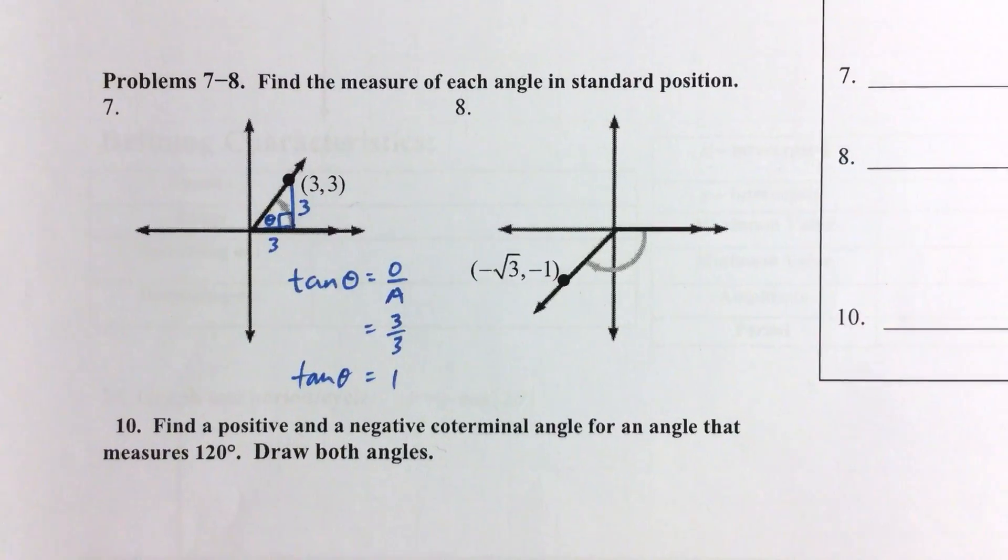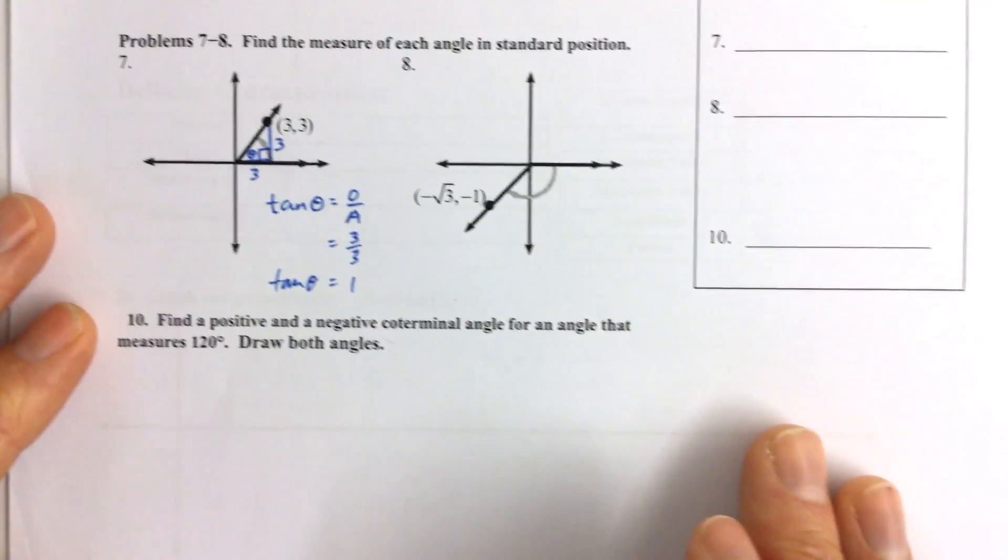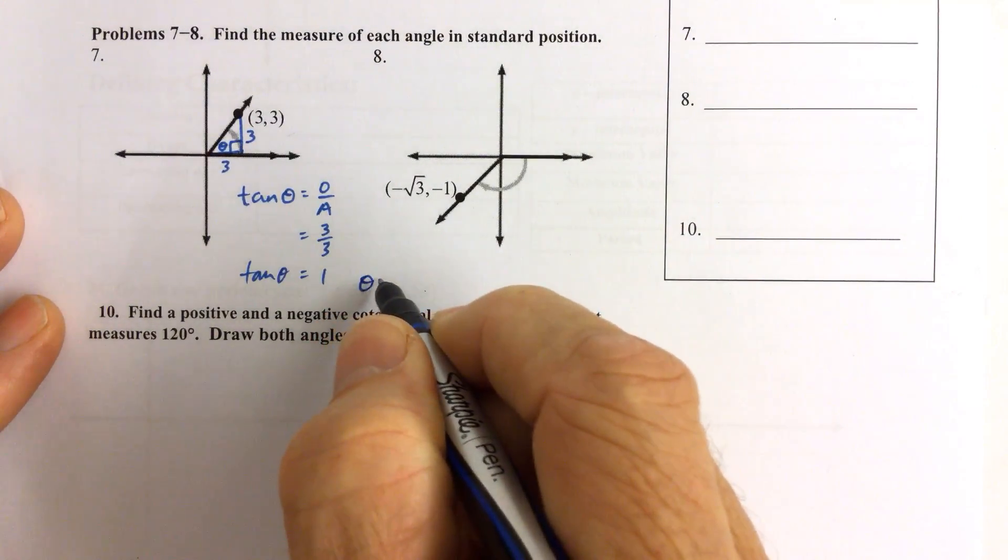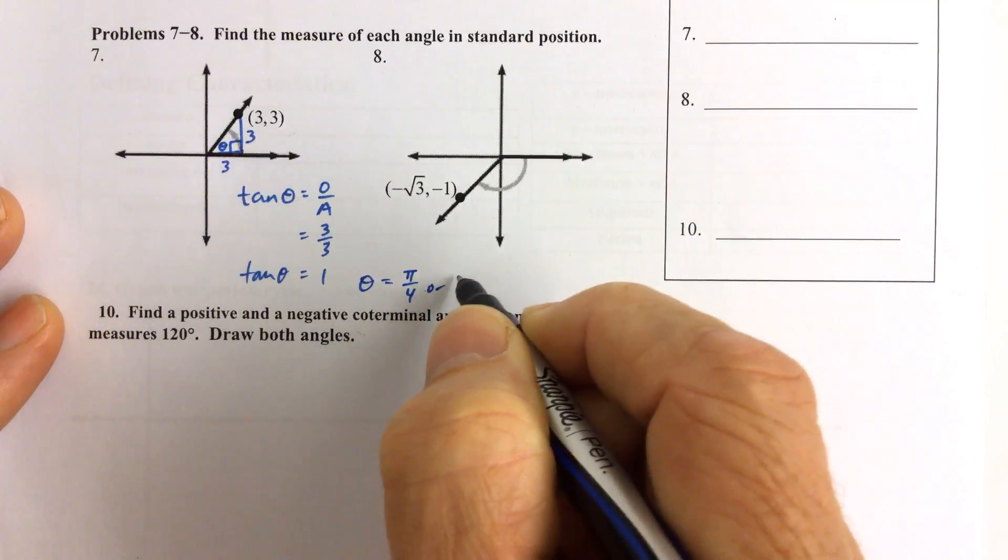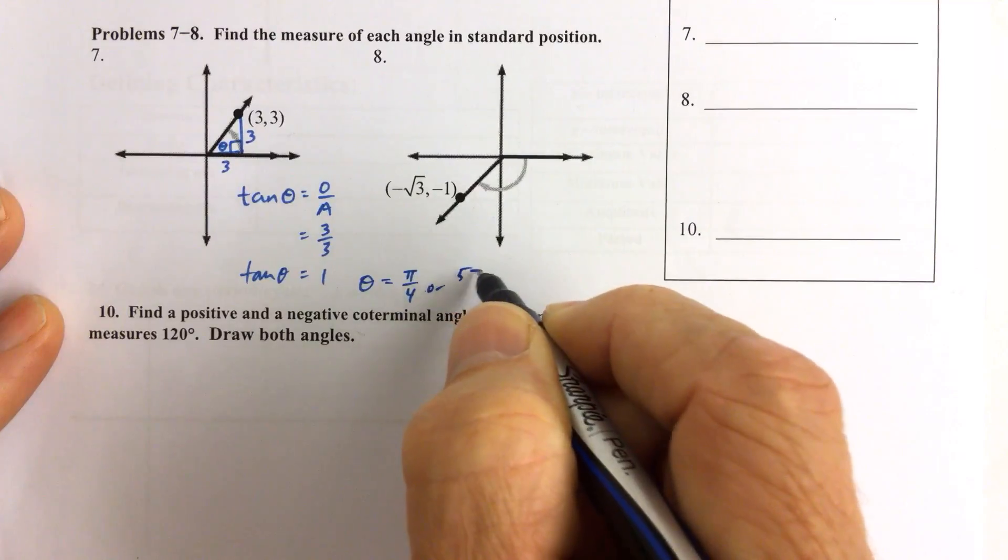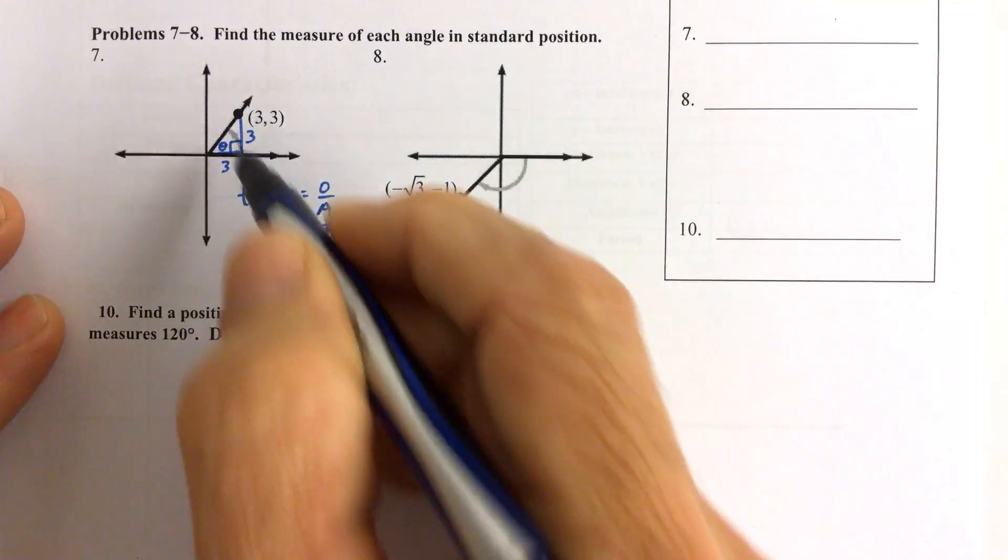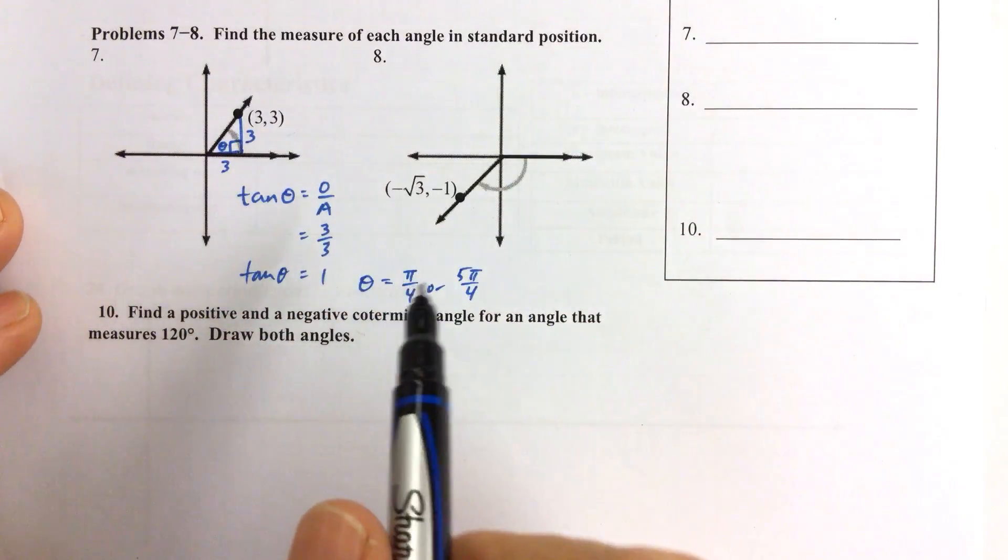Zoom out a little bit. Now, if the tangent of the angle is equal to 1, we know that the angle has to be either pi over 4 or 5 pi over 4 because we know our unit circle.